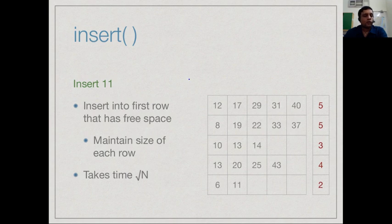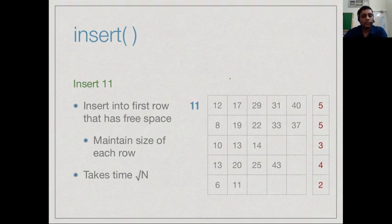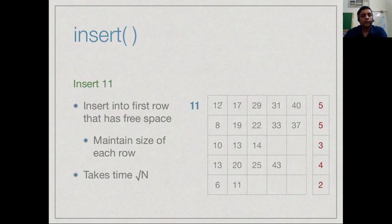Now suppose we want to insert a new job into this list. The strategy is very simple, we want to insert it in the correct place in the first row that has free space. To find out if one of the rows has free space, we need to walk down this thing. We will save that work by keeping this extra information which is the size of each of the rows. If the size is 5 then we know that if we try to insert 11 into this first row that 11 will not be able to fit there because there is no space.